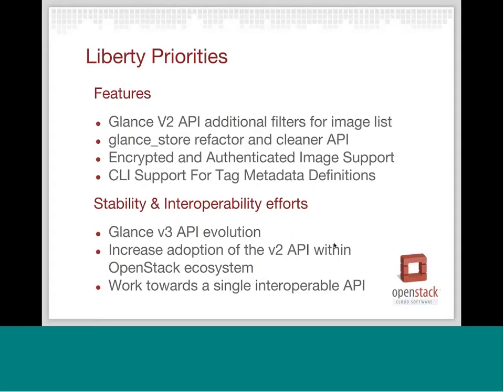We focused a lot on features in Kilo. As a result of that, we wanted to take a step back and see how things were going. We found that some of the features were still experimental, and we wanted to fix those. We enhanced our focus, as well as developer interest, in stability and interoperability efforts. We have prioritized some features, and the Glance V2 API additional filtering is planned. It's a symbiotic feature for supporting the V1 to V2 migration within Nova, and we want to accomplish that within the Liberty timeframe. We have enough support on it and developers are interested in accomplishing that, so that's one of our biggest priorities at the moment.